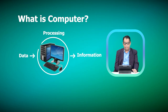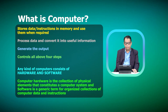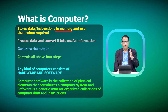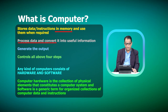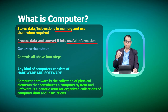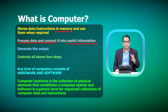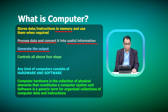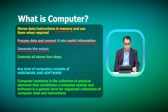The first function is that the computer takes data as input, and this data or instruction is stored in memory for whenever it is required. It processes the data and converts it into useful information. For example, when we have marks scored by students in a class, that is raw data. When we process this data, we can determine who is the topper, who scored the lowest, or how many students scored above 90 percent. The computer generates a definite output and all these functions can be controlled by the computer system.